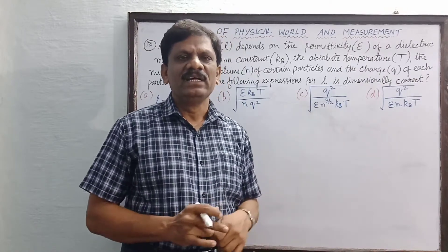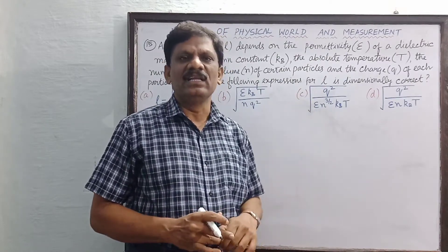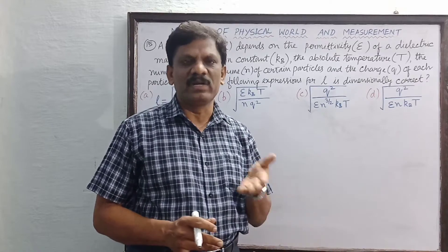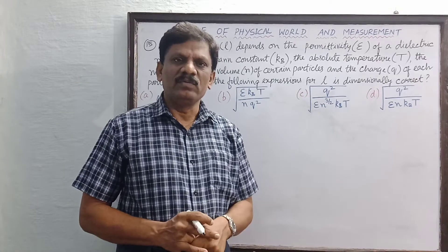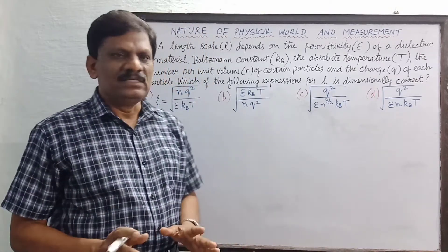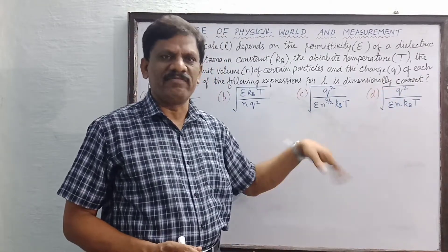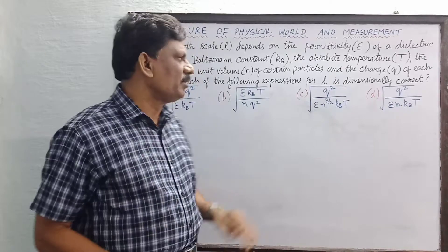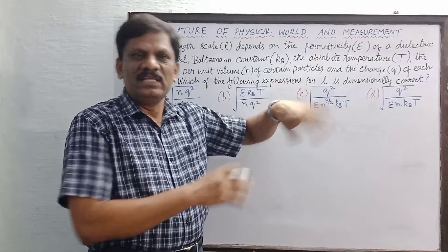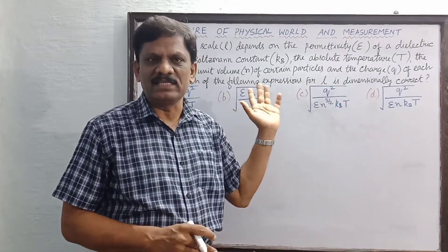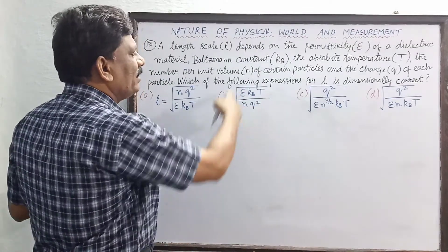This is a highly advanced question because terms like dielectric permittivity and Boltzmann constant will be encountered in the second volume of Class 11 and first volume of Class 12. The method is to randomly substitute dimensions or units of each physical quantity. The right answer is Option B — let us verify by checking Option B.